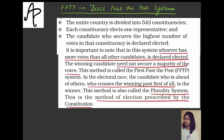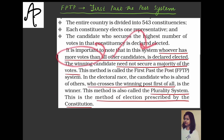The key feature of FPTP: whoever has more votes than other candidates is declared elected. The winning candidate need not secure a majority — it is not important they get more than 50%. What matters is getting more votes than the other candidates. Therefore this is called 'first past the post' — whoever crosses that winning post first is considered the winner.